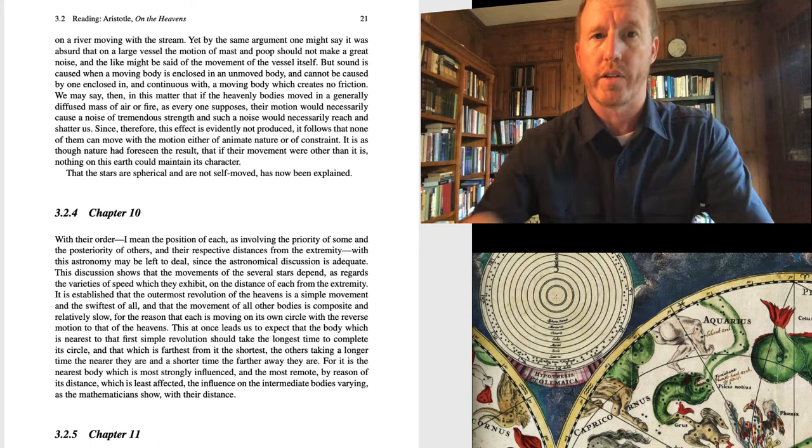Hello, this is Professor Keene. Welcome back to Introduction to Astronomy at Wisconsin Lutheran College. We've been looking at Aristotle's book On the Heavens, which is referenced in A Student's Guide to the Great Physics Texts, Volume 3. We are in Chapter 3 of A Student's Guide right now. The specific text we'll be looking at begins on page 21 — Aristotle's Chapters 10, 11, and 12.